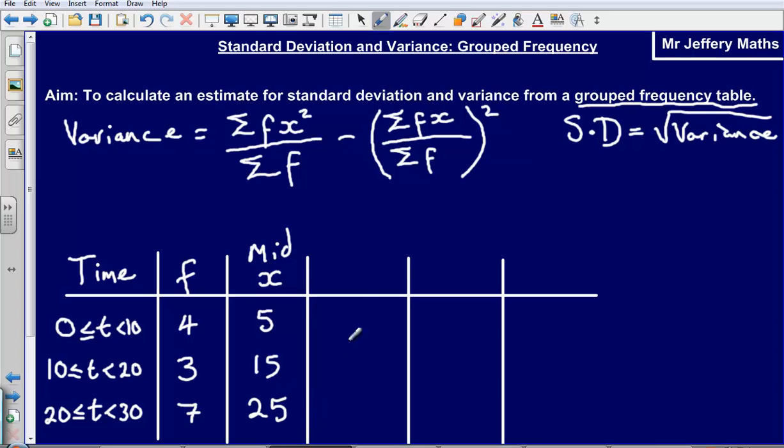The next thing that I'm going to do is, well I don't need to just work out x, I also need to work out x squared as well. So let's work out x squared for each of our midpoints. So our midpoints are our x's, so our x squared will simply be 5 squared. So that's going to give me 25, 15 squared, 225, and then 25 squared, 625.